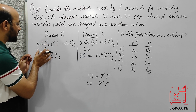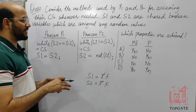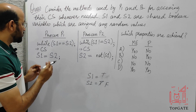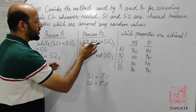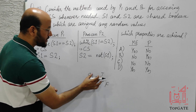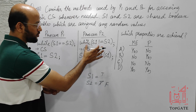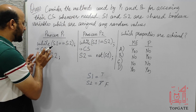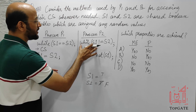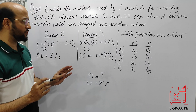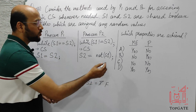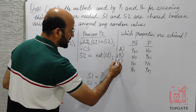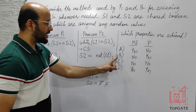To confirm: when P1 is in the critical section (S1=true, S2=false), P2 checks while(S1 != S2) — condition is true, so P2 is stuck and cannot enter the critical section. Only options A and D show mutual exclusion as satisfied, so B and C are wrong. We now need to determine whether progress is satisfied.